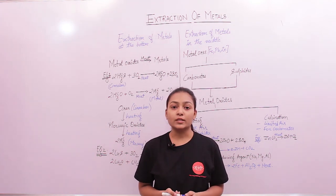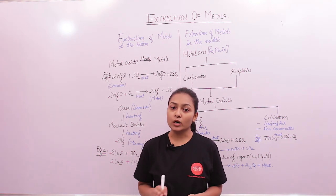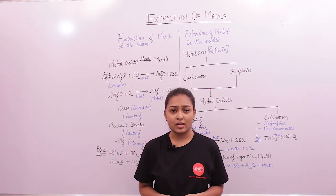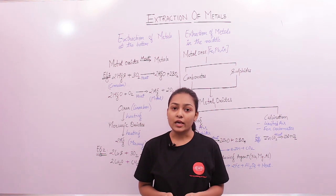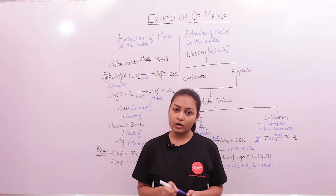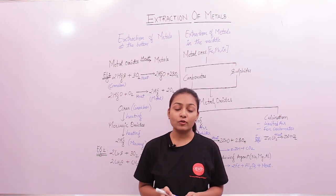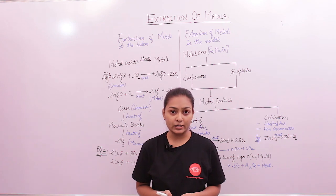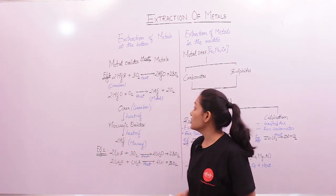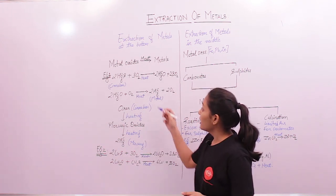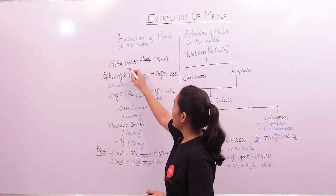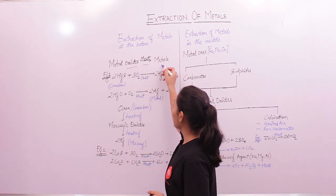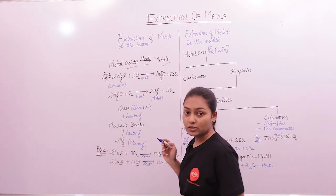The metals at the bottom of the reactivity series are less reactive. Therefore these metals can directly be obtained from their metal oxides just by heating. As you can see, the metal oxides on heating give us the metals.